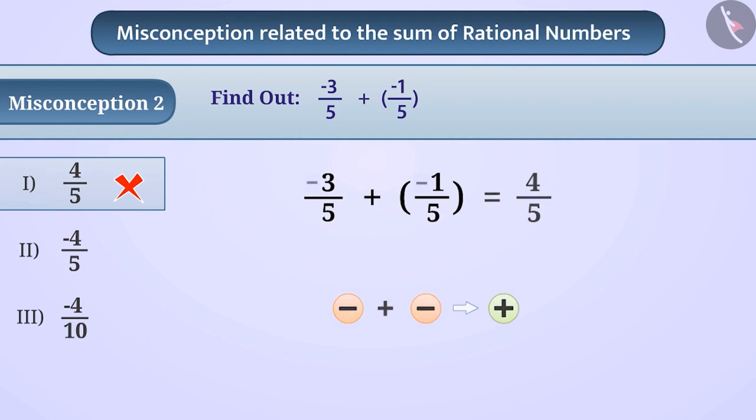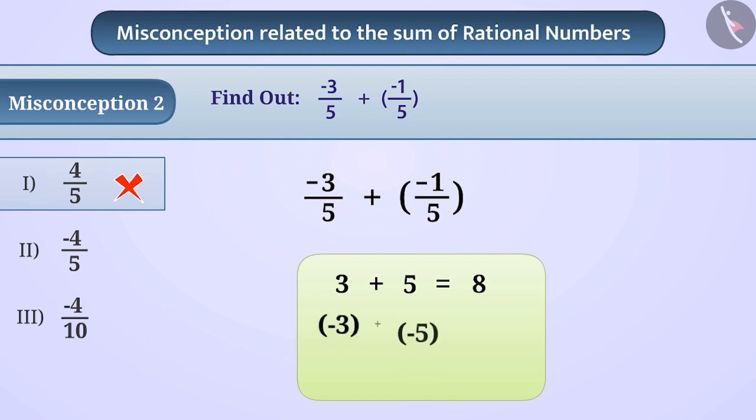The correct understanding is that it is necessary to take care of the signs of numbers while doing addition. The sum of two positive rational numbers is positive. The sum of two negative rational numbers is negative. If there is a positive and a negative rational number, then the sum takes the sign of the rational number whose value without the symbol is larger.